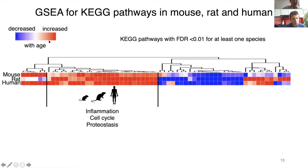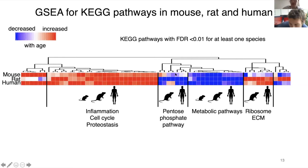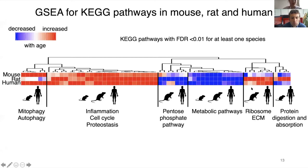The clustering revealed one clear cluster of pathways enriched with genes increasing expression during muscle aging — these are pathways regulating inflammation, cell cycle, and proteostasis — as well as a cluster of pathways related to metabolism. Several pathways were enriched in just two species: ribosome and extracellular matrix pathways were enriched in rat and human, while mitophagy and autophagy were enriched only in mouse and rat.